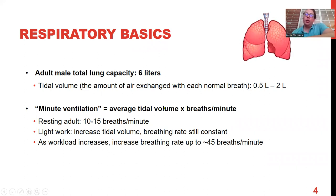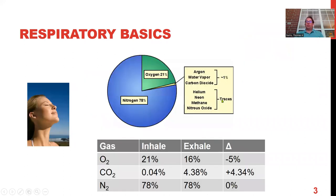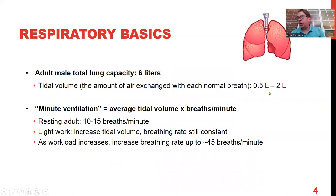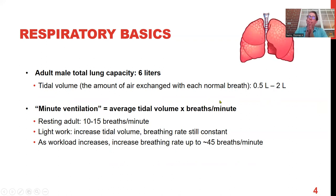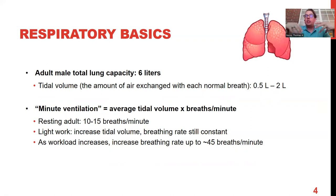We know the volume per breath, and now we want to know per unit time — in one minute — how much oxygen is absorbed. If we assume 5% of the oxygen in the atmosphere is absorbed per breath, and we know the volume of air and the number of breaths per minute, we can determine the rate of oxygen availability for aerobic metabolism.